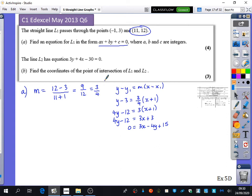The next part says line L2 has the equation 3Y plus 4X minus 30 equals 0, and we're going to find the coordinates of the point of intersection. The point of intersection means we're going to do simultaneous equations. The simultaneous equations are 3Y plus 4X minus 30 equals 0, and this one - they've got it written in a slightly different order, so I'll write it in their order: minus 4Y plus 3X plus 15 equals 0. What method do you think is better? Substitution or elimination?